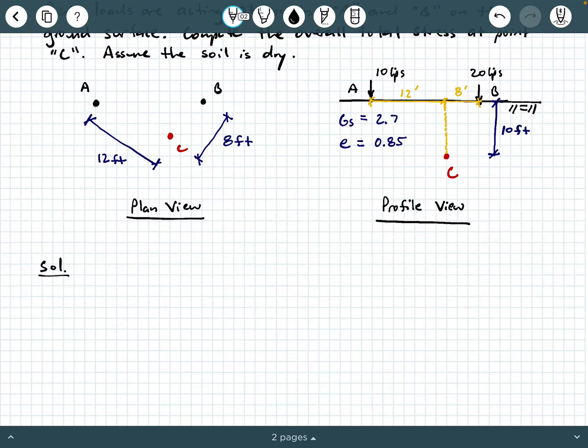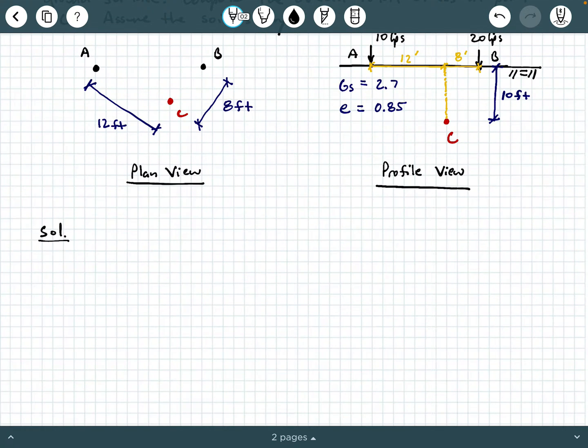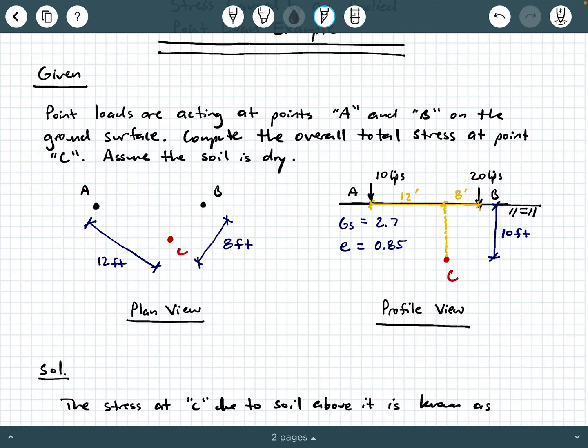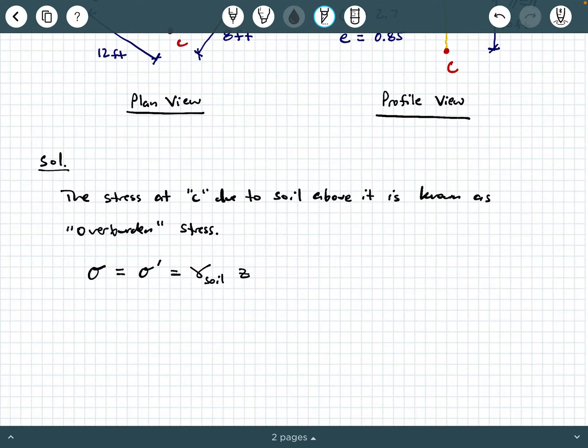Now the problem says the overall total stress at point C is what we need. So let's first compute the stress at C due to the soil alone. So the stress at C due to soil above it is known as what we call overburden stress. And this is just going to be a calculation that hopefully you remember from before. That's total stress equals effective stress equals the unit weight of the soil times the depth.